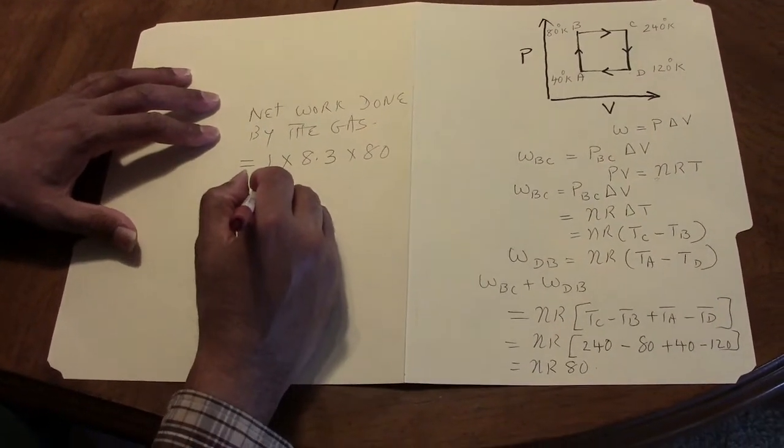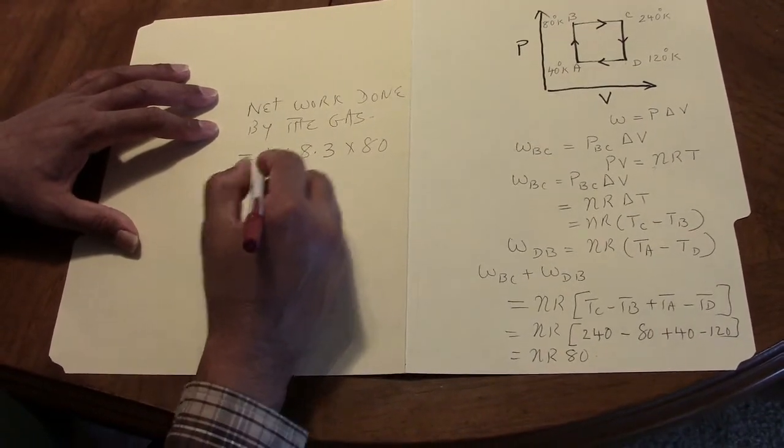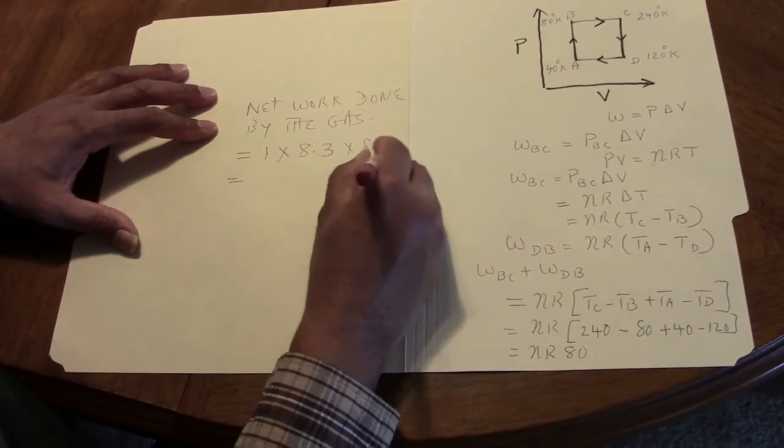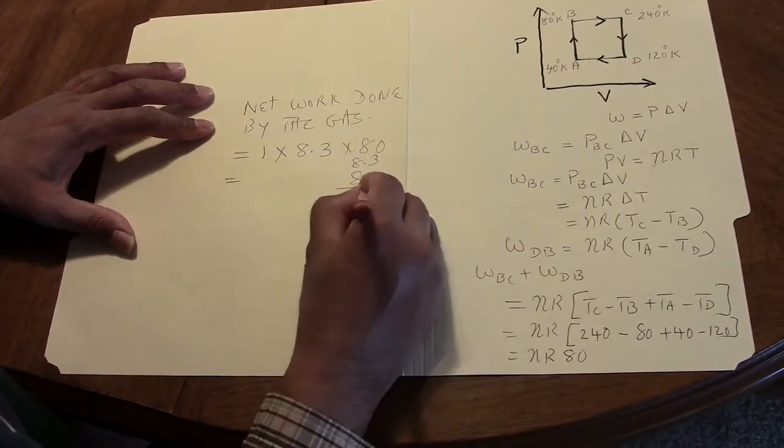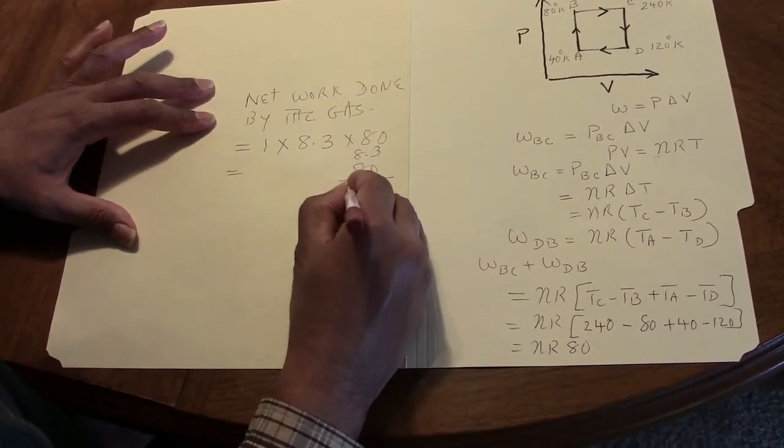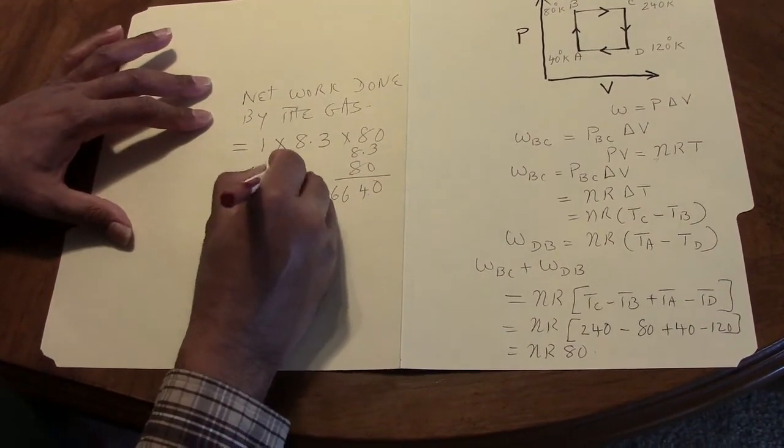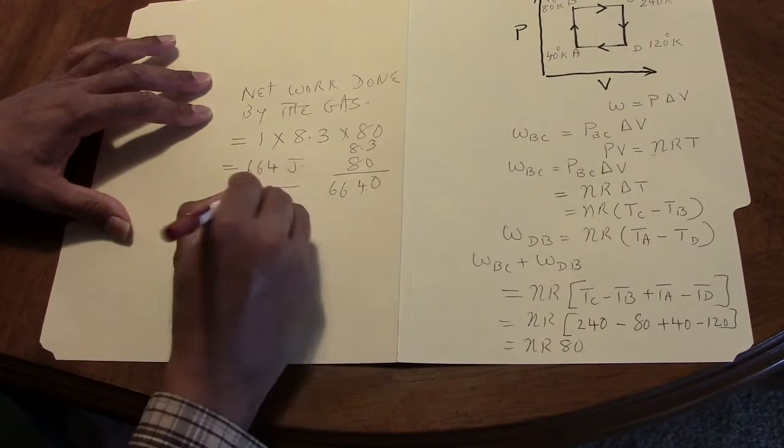So, this would be one times the gas constant, which is 8.3 joules per mole per degree Kelvin, times 80 and this would give us 8.3 times 80.